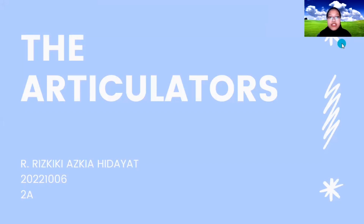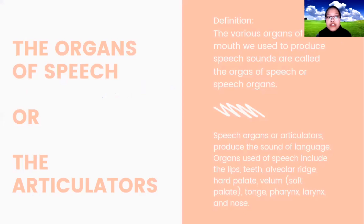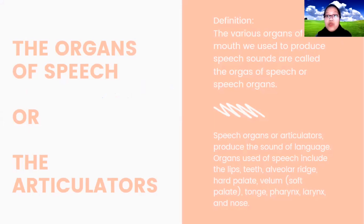There is the definition of the organs of speech or the articulators. The definition is: the various organs of our mouth we use to produce speech sounds are called the organs of speech or speech organs.